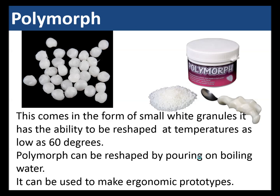Polymorph comes in the form of small white granules and has the ability to be reshaped at temperatures as low as 60 degrees. Polymorph can be reshaped by pouring on boiling water. It can be used to make ergonomic prototypes — for example, a handle for a spoon has been made using polymorph.